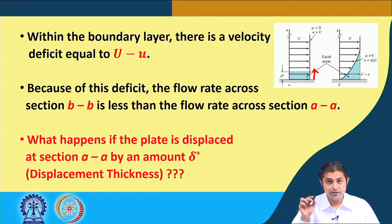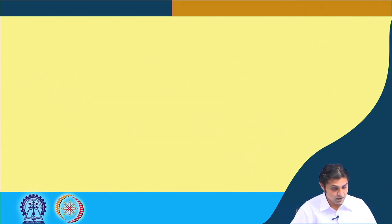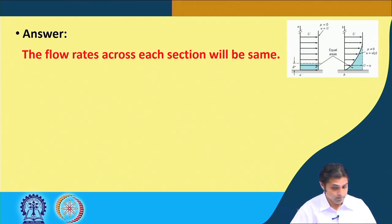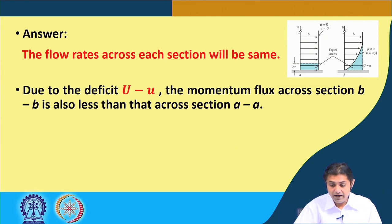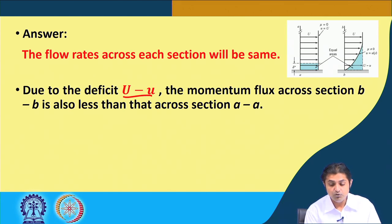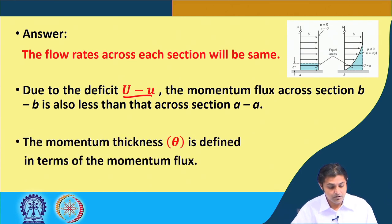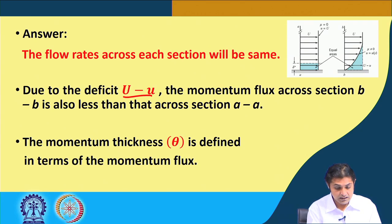We displace this plate to here, for example. The flow rate across each section will be the same because the area is the same. But in section BB, due to the deficit U minus u, the momentum flux across section BB is also less than that across section AA, because the velocity is different — it is a deficit of U minus u.